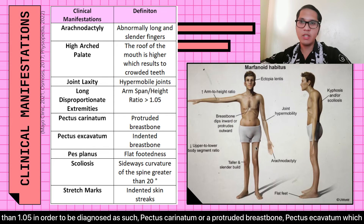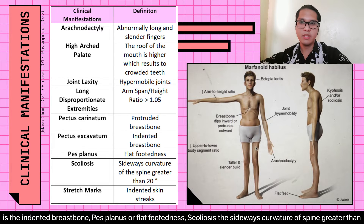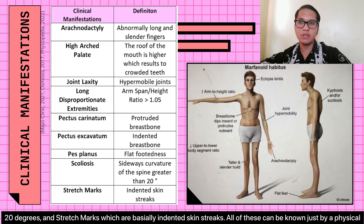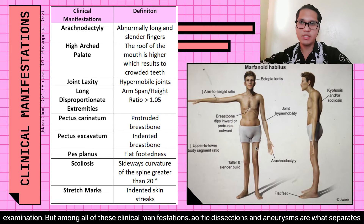Additional clinical manifestations include pectus carinatum, or a protruded breastbone; pectus excavatum, which is the indented breastbone; pes planus, or flat-footedness; scoliosis, a sideways curvature of the spine greater than 20 degrees; and stretch marks, which are indented skin streaks. All of these can be identified through a physical examination.